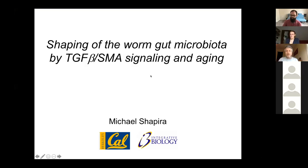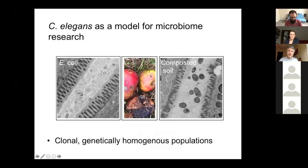What I'm going to talk about today is our use of C. elegans as a model to study the microbiome — specifically, to study the factors that shape the microbiome. This comes with the realization that most animals, if not all, are typically colonized by a diverse community of microbes, most known being the bacterial microbiomes.